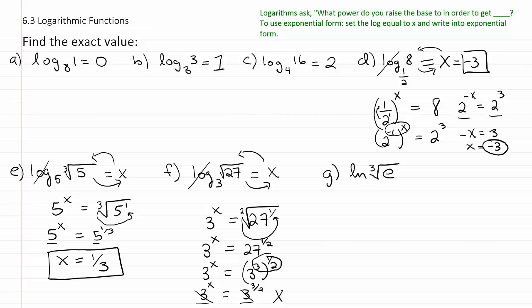So x is equal to 3 halves is our solution. Or in other words, we raise 3 to the 3 halves power to have it be equal to the square root of 27.